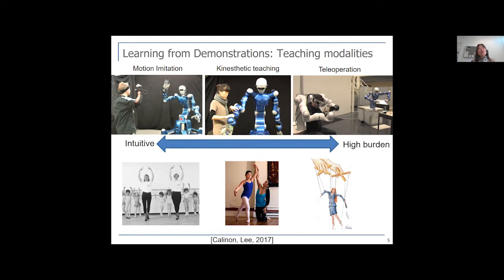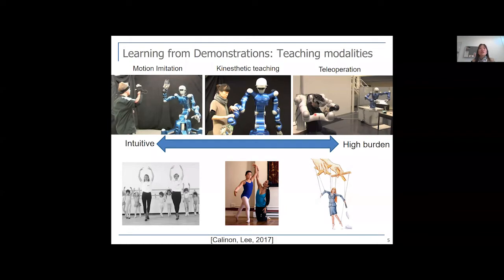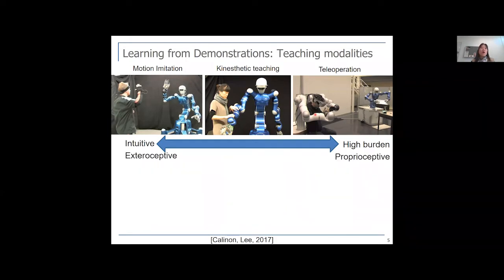When one agent imitates another's motion, they share only exteroceptive sensing data. With teleoperation systems, we can also sense what the robot senses — like force information — so we can teach the robot correct force profiles. The most left-hand side approach is very intuitive from the teacher's perspective, while teleoperation increases the human's cognitive burden but enables richer sensory data transfer.